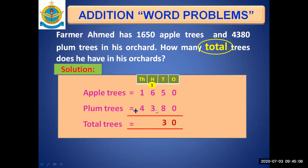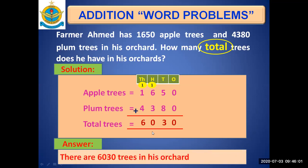Add hundreds with carry: six plus three is nine, plus one carry is ten — write zero and carry one to thousands. Add thousands with carry: four plus one is five, plus one is six. The answer is six thousand and thirty total trees. Remove the question mark from the last sentence for the answer statement: there are six thousand and thirty trees in his orchard.